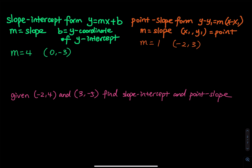Another way to write that is using point-slope form: y minus y1 equals m times (x minus x1), where m is equal to the slope, and x1, y1 is a point on the line.